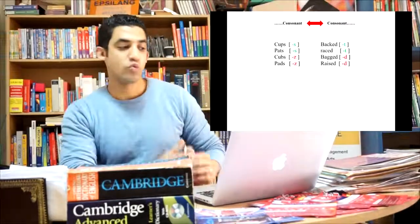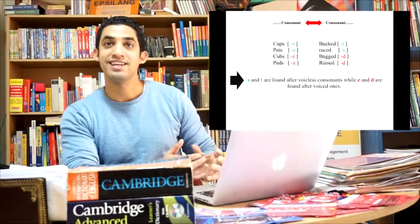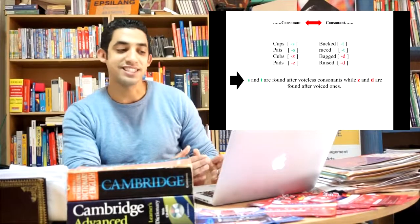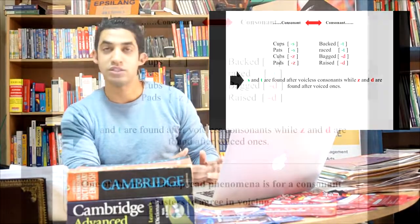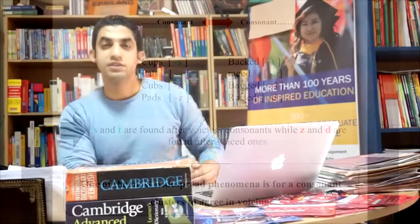Another common example in assimilation process is the one found in English. A consonant affects or takes the feature of another consonant. And here we can take the example of the plural morpheme S or the past morpheme D. One of the most widespread phenomena is for consonant clusters to agree in voicing. And here we can take the example of English. S and T are found after voiceless consonants, while Z and D are found after voiced ones. You can see the examples here: cups, backed, pats, raised. But we say cabs, pads, bagged, raised, etc.